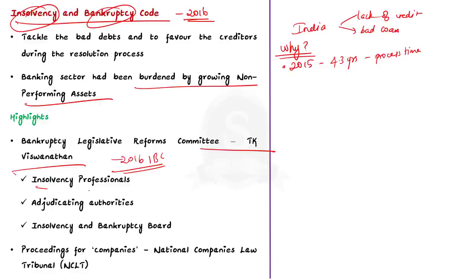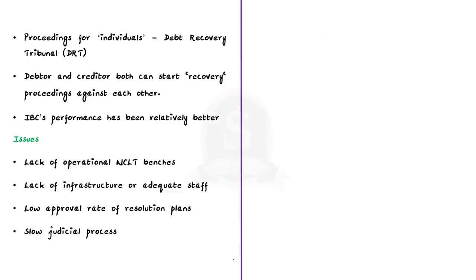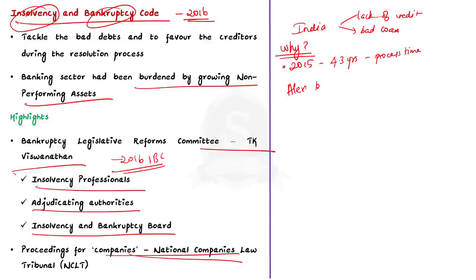It provides for a time-bound process to resolve insolvency. The court created various institutions to facilitate resolution of insolvency. These are insolvency professionals, adjudicating authorities and insolvency and bankruptcy board. Also note that the proceedings for companies will be adjudicated by the National Companies Law Tribunal and the proceedings for individuals will be adjudicated by Debt Recovery Tribunal. Now, we will see how the insolvency resolution works. Imagine you have a friend named Alex who runs a small business. Alex's business has been struggling lately and they are finding it hard to repay the loans they took to start the business. They have reached a point where they cannot pay their debts on time and the situation is getting worse.